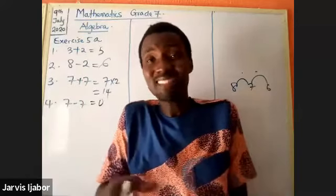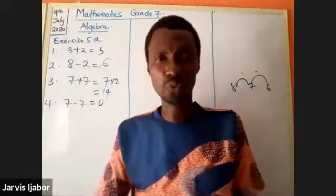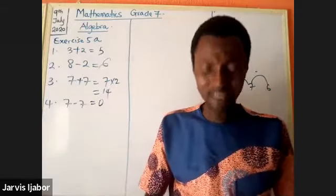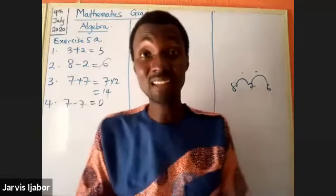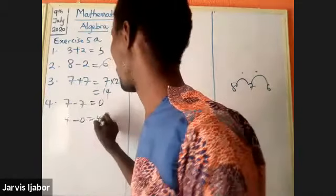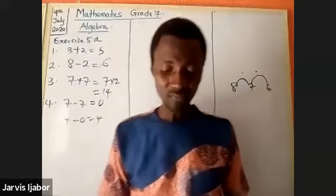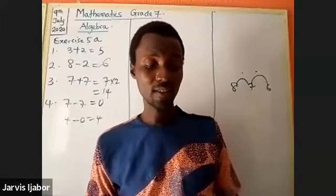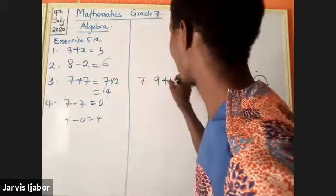If two numbers are the same and you subtract them, the answer must be zero. If two numbers are the same and you are adding them, the answer is that number times two. These are codes you must have when dealing with numbers. Number six: four minus zero means stay where you are — four minus zero equals four.